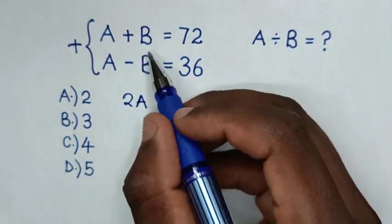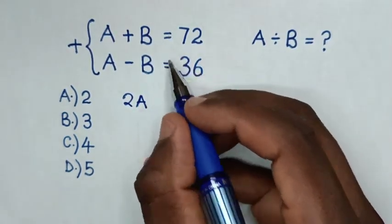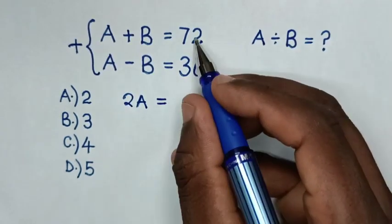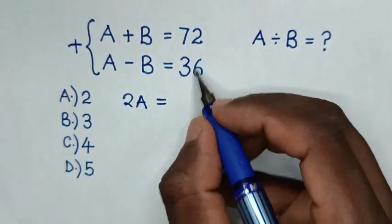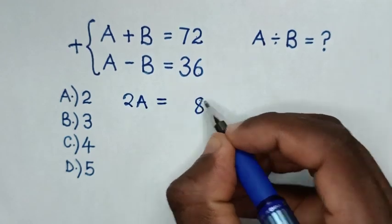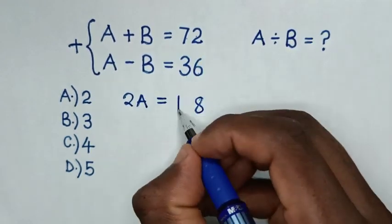Then, B minus B is 0. Then, it will be equal to 72 plus 36, 2 plus 6 is 8, 7 plus 3 is 10.